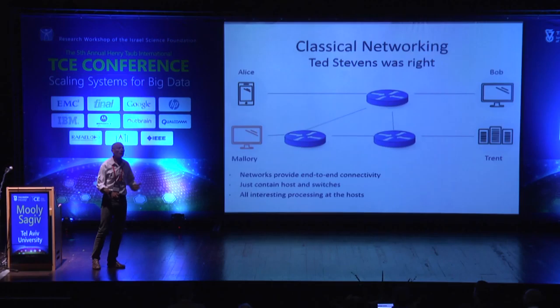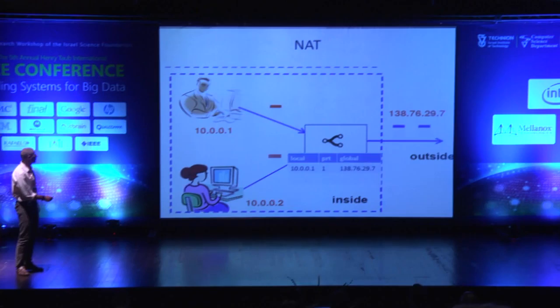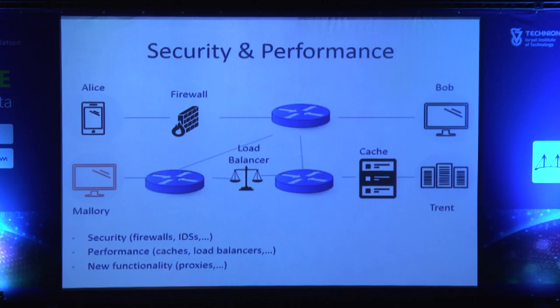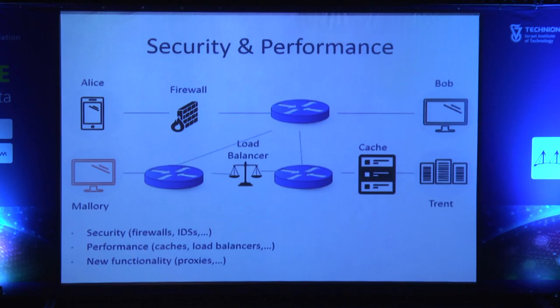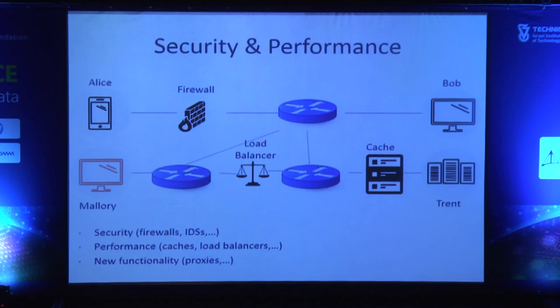There are many other reasons why the network is far more complicated. In order to deal with these complications, you see there is a firewall, there is a load balancer — all kinds of things that are taking care of the correctness and performance of the network, including cache performance and security.